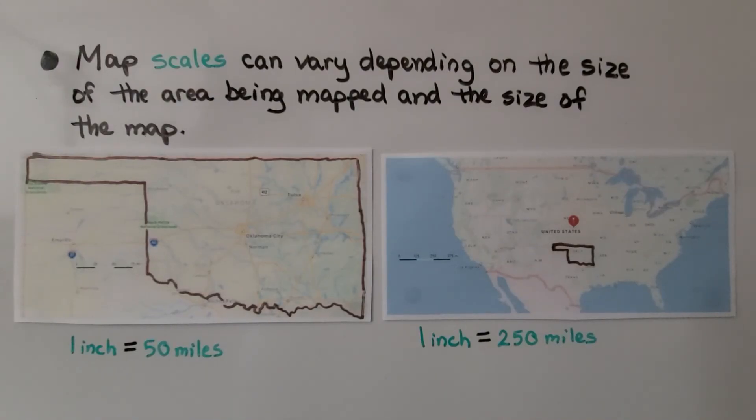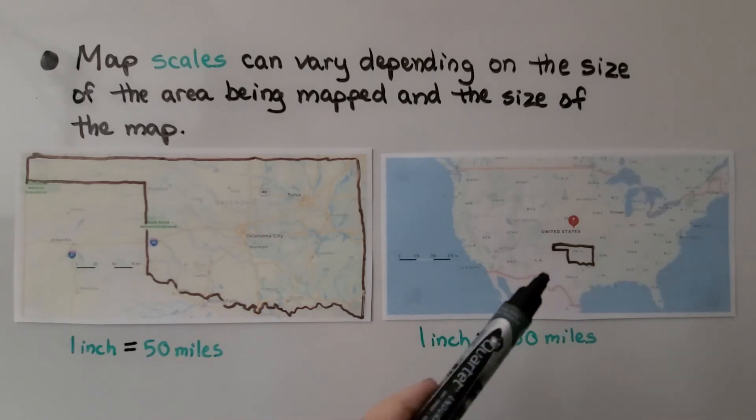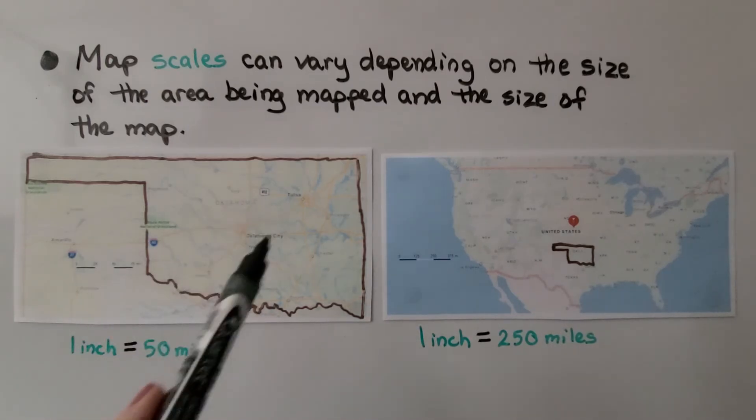Map scales can vary depending on the size of the area being mapped and the size of the map. Here we have a map of Oklahoma, and it tells us 1 inch is equal to 50 miles. But when we move out away, and here's Oklahoma, this little area, it says 1 inch is equal to 250 miles. So map scales can vary depending on the size of the area being mapped and the size of the map.